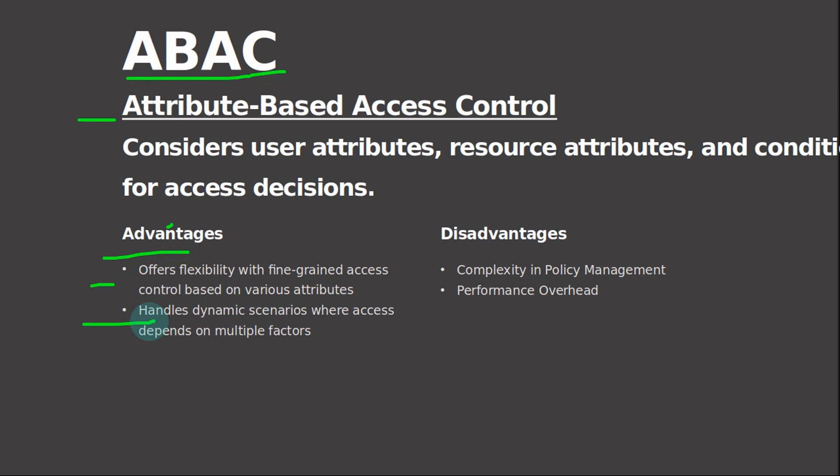ABAC enables administrators to define policies that consider a wide range of dynamic factors when making access decisions. For example, access to sensitive data may be granted only if the user requesting access is within the organization's premises and using a trusted device, ensuring that access is granted only under specific conditions. By dynamically adapting access control decisions based on contextual factors, ABAC enhances security and flexibility in PostgreSQL environments, enforcing access policies that align with business requirements and risk tolerance, while accommodating changing circumstances and evolving threats. Furthermore, ABAC facilitates adaptive access control strategies, where access decisions are continuously reassessed based on real-time feedback and analytics.